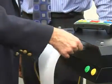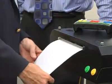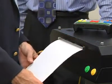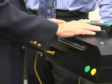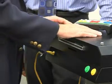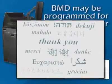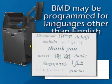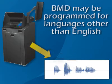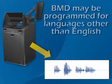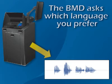Now that you are ready to begin, the inspector inserts a blank paper ballot into the slot at the back of the BMD printer unit. Depending on your polling site, your BMD may be programmed for languages other than English. If yours has been programmed, at the start of your audio session, the BMD asks which language you prefer.